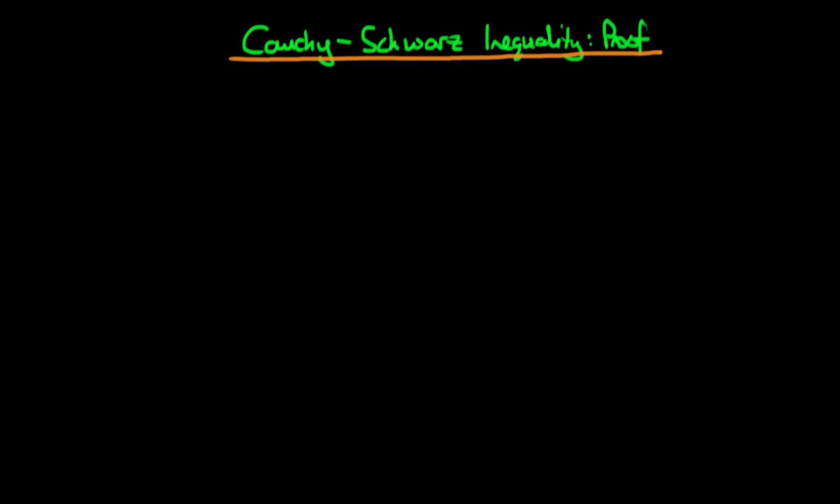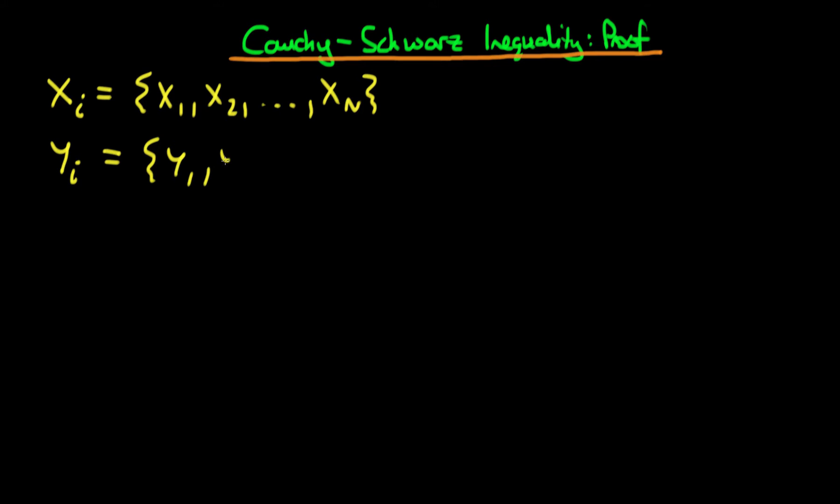In this video, I want to provide a proof of the Cauchy-Schwarz inequality. First, we need to define some sequences. I'm going to define a sequence xi as x1, x2, all the way through to xn. And then we also define a sequence of another variable, which I'm going to call yi, which is the sequence y1, y2, all the way through to yn.